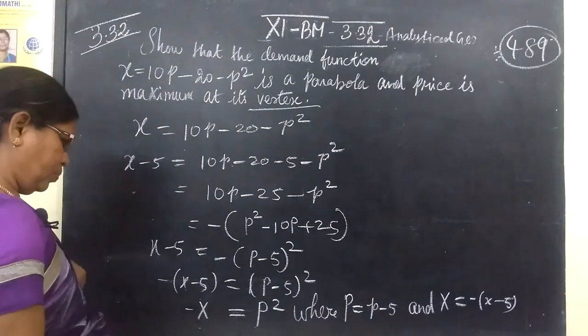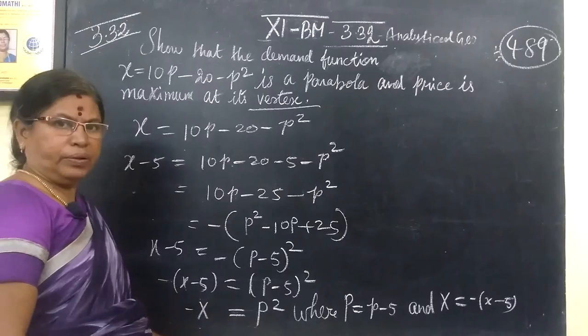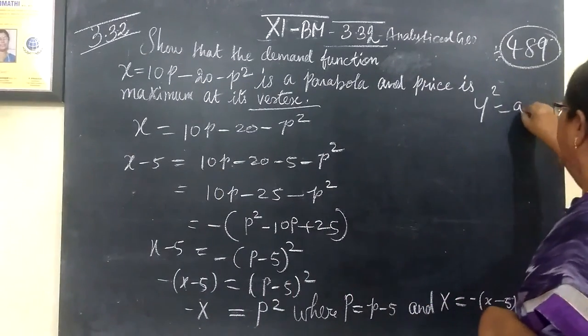And now we have the parabola equation: Y squared equals 4ax.